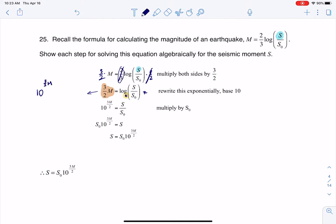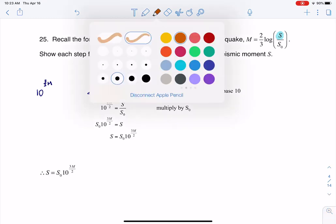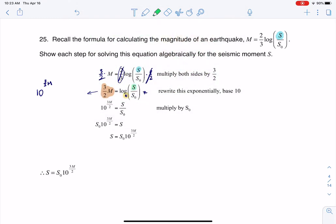The argument of the logarithm, let me color code this again, the argument of the logarithm, this S over S sub zero, that's what this exponential equation will be equal to, and that's what you see me writing at this step.